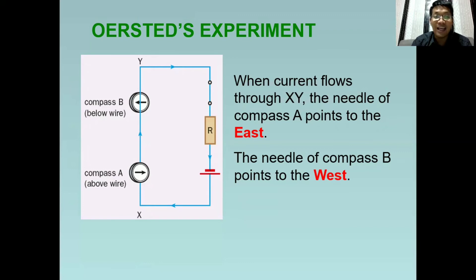Tatandaan ulit natin na ang compass A ay nakalagay sa taas ng wire. At ang compass B naman ay nakalagay sa ilalim ng wire. Kaya ang rason kung bakit magkaiba sila ng direction ng pointer.